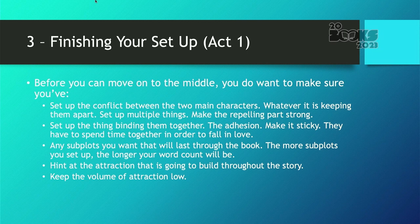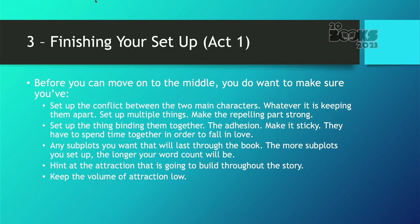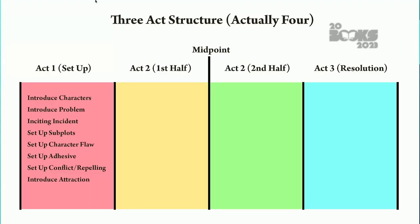The more subplots you introduce, the longer your word count will be. You want to also hint at that attraction that is going to build throughout the story — I like to think about attraction as a volume knob. You want to keep that volume knob low in the beginning because you want somewhere to build to throughout the story. I like to keep that volume at a one or a two in the very beginning. So the act one chart: introduce your characters, introduce the problem, introduce the inciting incident, set up the subplots, set up your character flaw, set up the adhesive and the repelling, and introduce the attraction. Usually in act one you have that meet-cute, which is probably going to be your inciting incident.